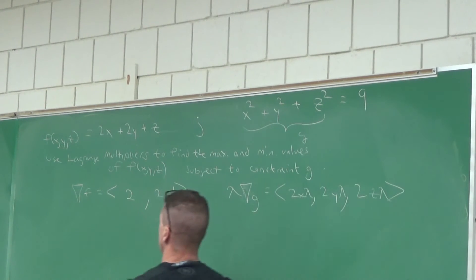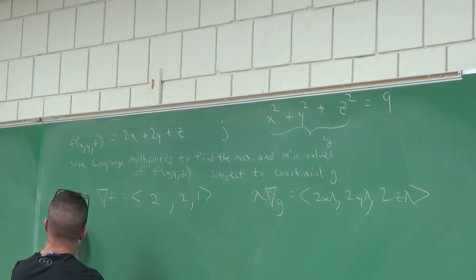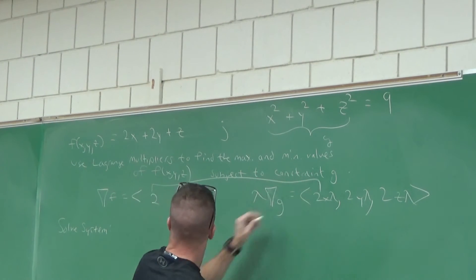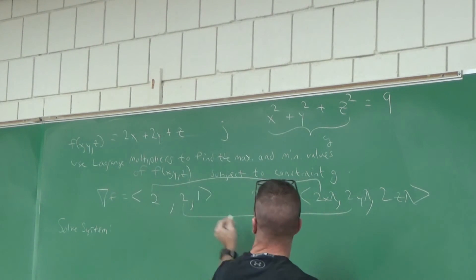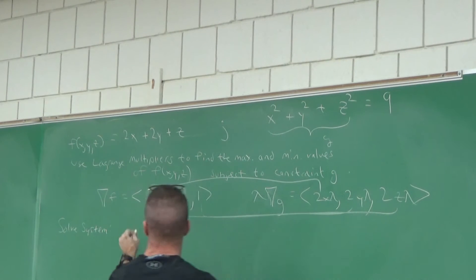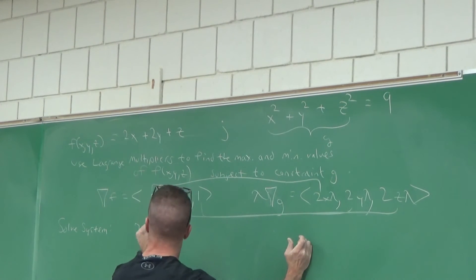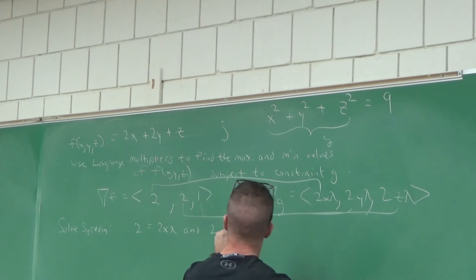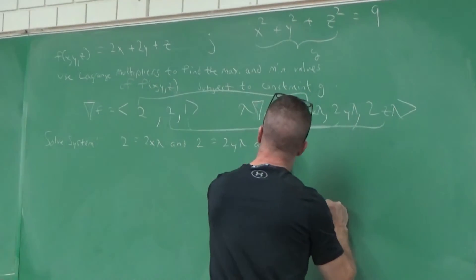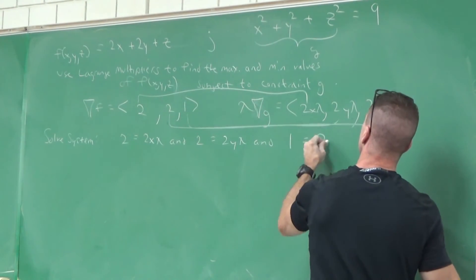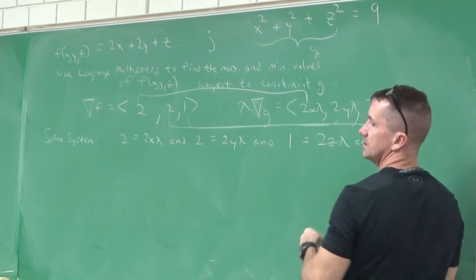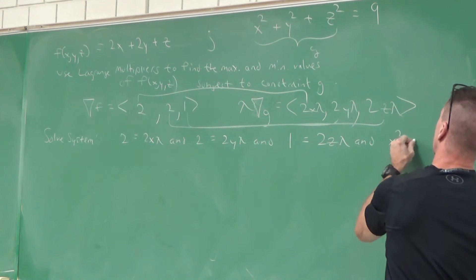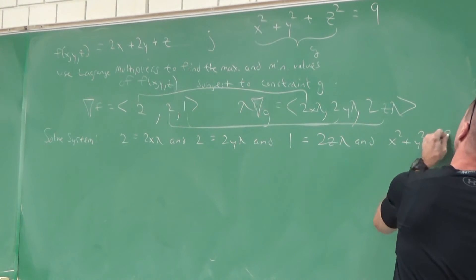Here's the system we're going to solve: two equals 2x lambda, two equals 2y lambda, and one equals 2z lambda. And the constraint: x squared plus y squared plus z squared equals nine.